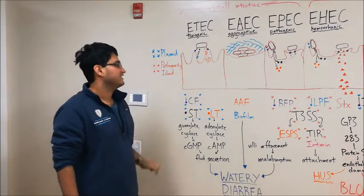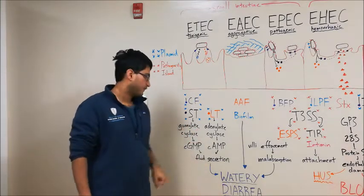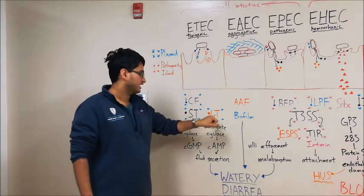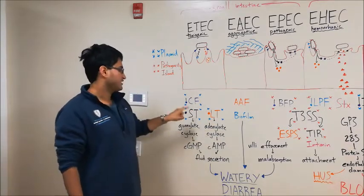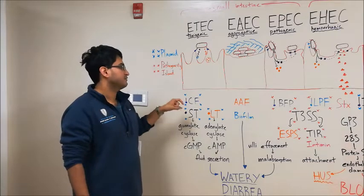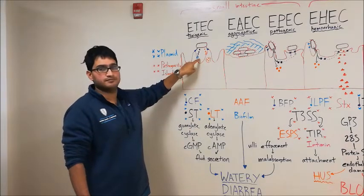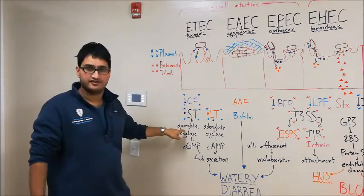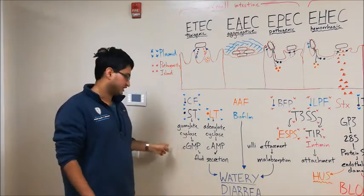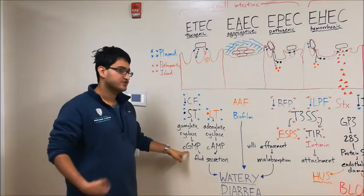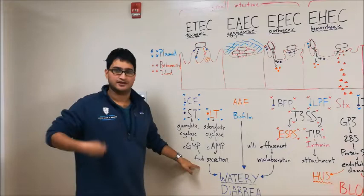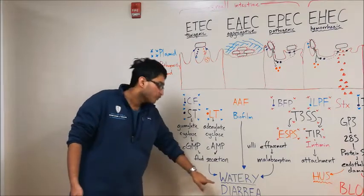Once adhered, it's going to release two toxins: stable toxin, or ST, and labile toxin, or LT. Stable toxin is going to bind to a receptor on the enterocyte cell membrane. This is going to lead to activation of the enzyme guanylate cyclase. Guanylate cyclase converts GTP into cyclic GMP, and the increase in cyclic GMP is going to lead to fluid secretion from the enterocyte into the lumen of the GI tract, leading to watery diarrhea.